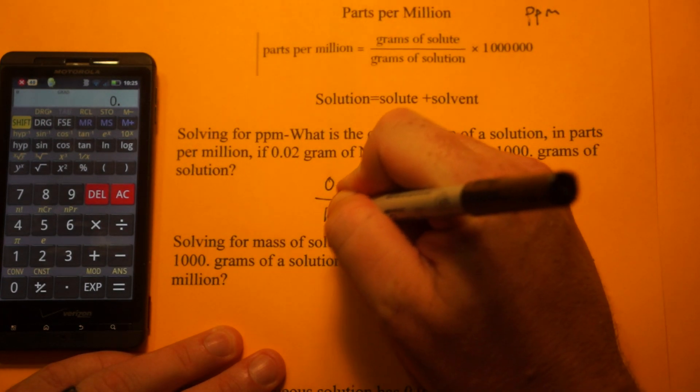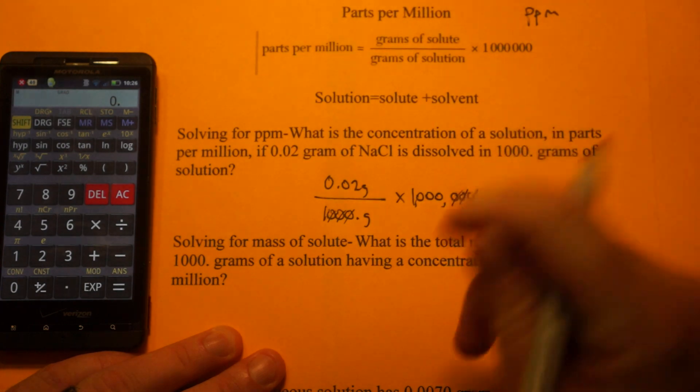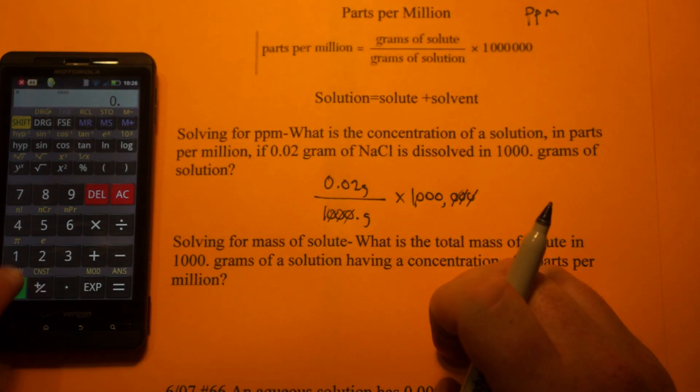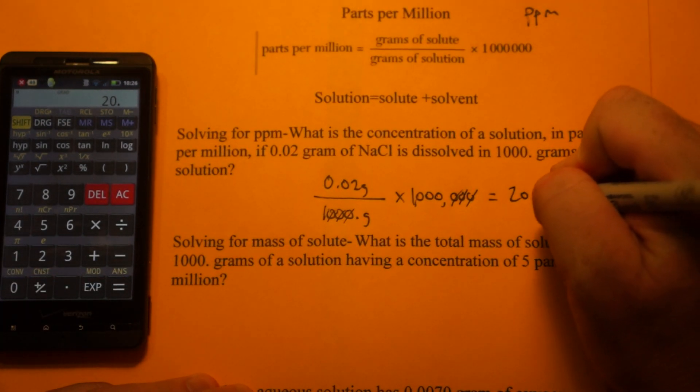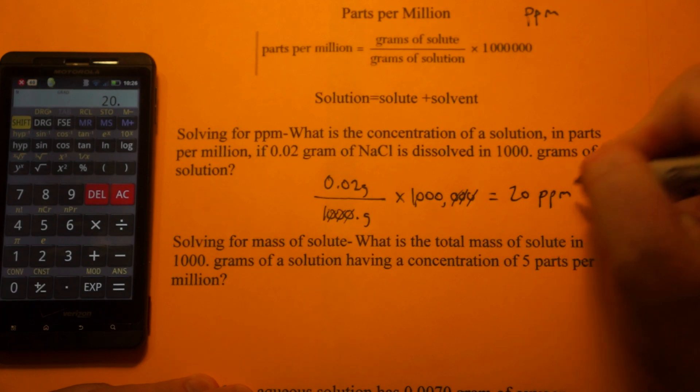Now I'm just going to show you a quick trick, 1, 2, 3 zeros, they're going to knock out 3 zeros. So it's really just 0.02 times 1,000, and you get 20, and the units are parts per million.